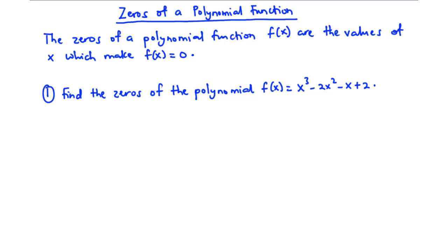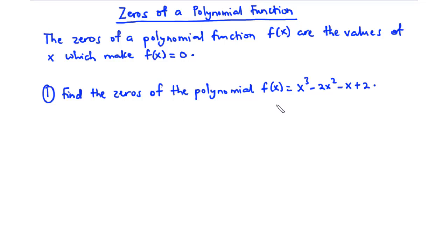Here we have a question: find the zeros of the polynomial f(x) = x³ - 2x² - x + 2. To find the zeros of this polynomial, we need to factorize f(x) completely.